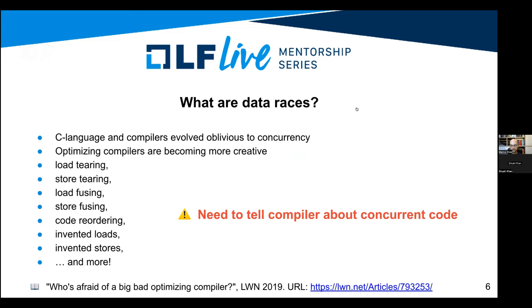What are data races? Data races came about because the C language and compilers evolved oblivious to concurrency. There are numerous optimizations that compilers can apply to plain C language accesses that would ultimately break concurrent code — if the programmer requires that a plain C language access actually happens as one indivisible atomic step. The solution is to make the compiler concurrency-aware while keeping useful optimizations. The best approach is to tell the compiler about accesses that will be used concurrently.